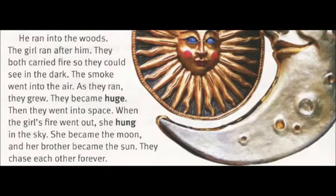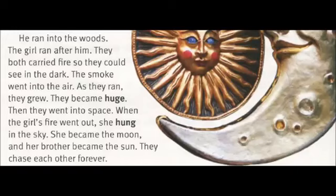He ran into the woods. The girl ran after him. They both carried fire so they could see in the dark. The smoke went into the air. As they ran, they grew. They became huge. Then they went into space. When the girl's fire went out, she hung in the sky. She became the moon. And her brother became the sun. They'd chase each other forever.